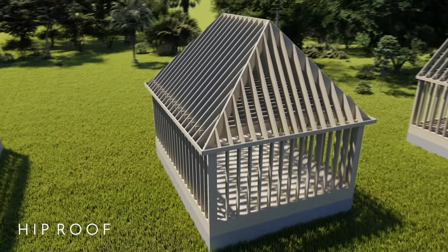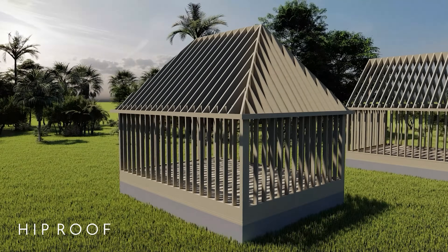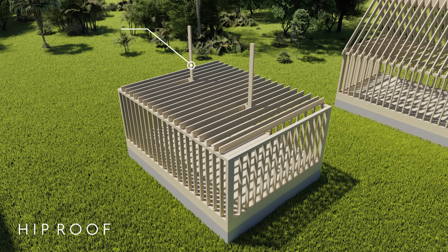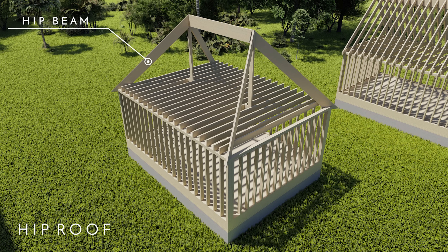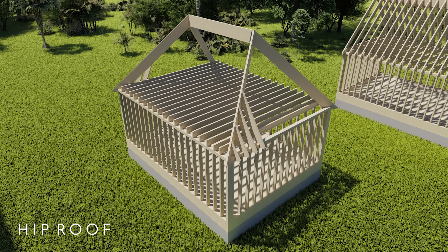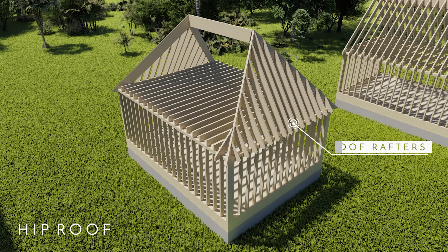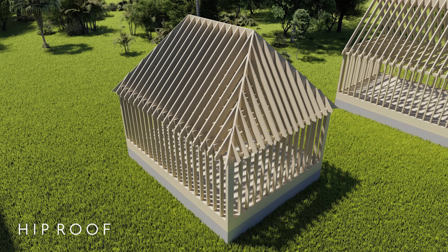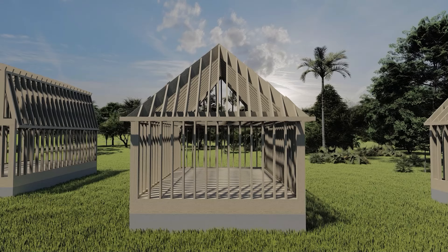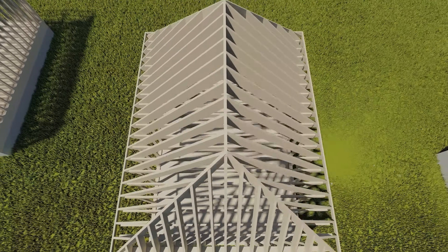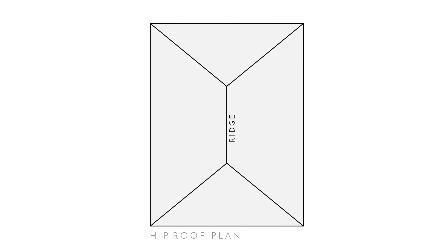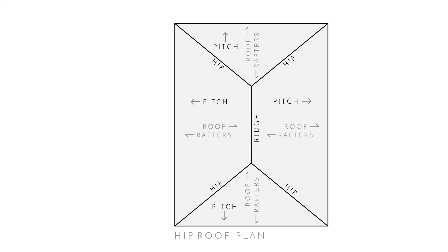Now let's look at the hip roof. It's a little bit more complex but not really. The posts start more in the middle instead of at the ends. Then the ridge is placed, and hip beams from all four corners connect to the end of the ridge. Then all the rafters fill in these four separate bays, and the fascia board caps off all the ends of the rafters. Looking at the hip roof plan, there's a ridge running right down the middle but unlike the gable it doesn't extend all the way to the exterior walls. These four hip beams connect to the end of the ridge and the roof rafters run away from the highest point with the same pitch.